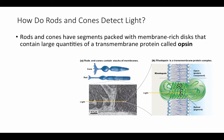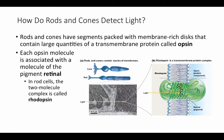Rods and cones have segments packed with membrane-rich discs that contain large quantities of a transmembrane protein called opsins. These regions contain stacks of discs visible under a micrograph, showing folds of membrane packed with these transmembrane proteins. This large transmembrane protein is called an opsin. Each opsin molecule is associated with a molecule of the pigment retinol, and in rod cells, this two-molecule complex — opsin plus its associated retinol pigment protein — is known as rhodopsin.